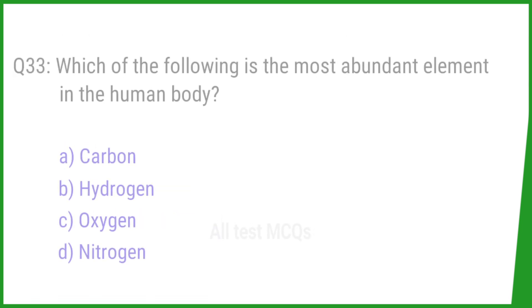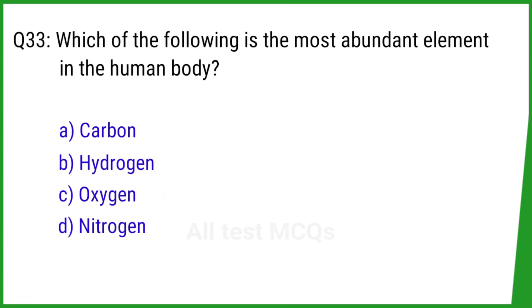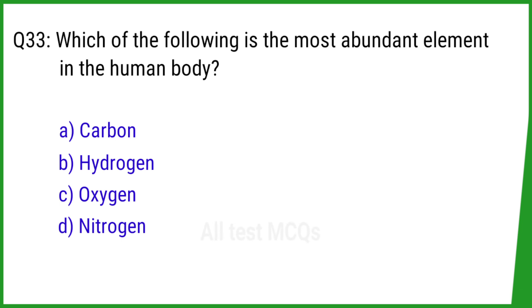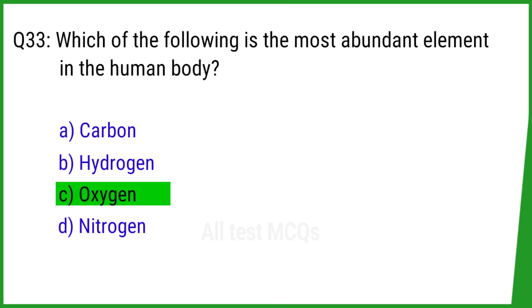Question number 33. Which of the following is the most abundant element in the human body? The right answer is option C: Oxygen.